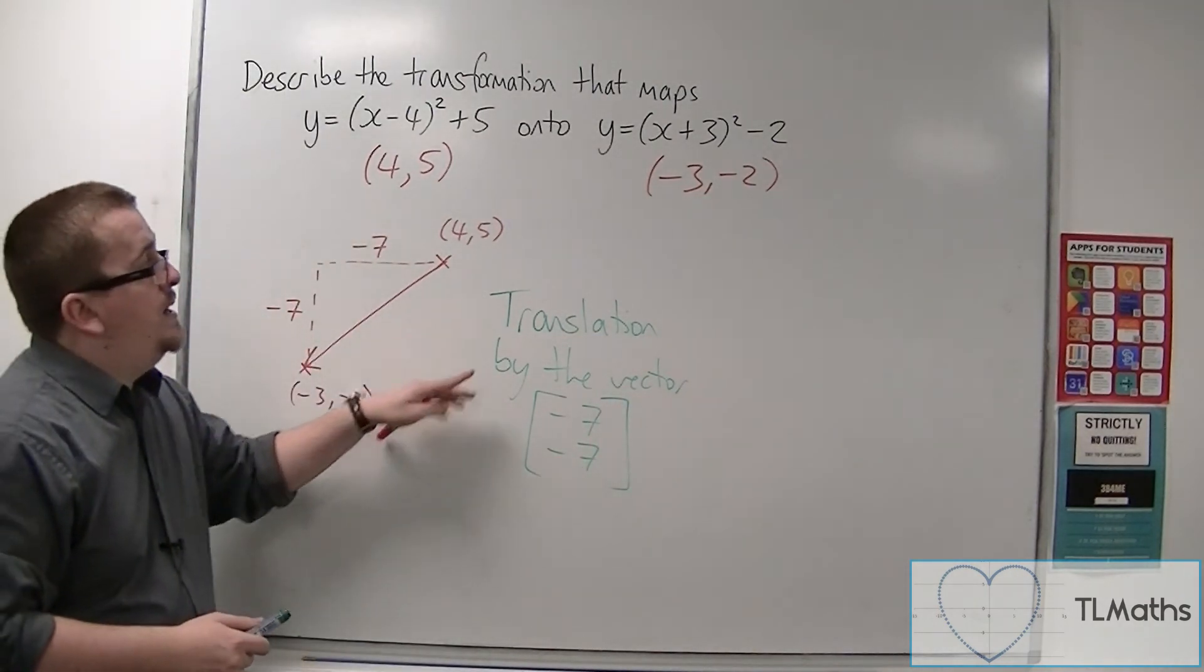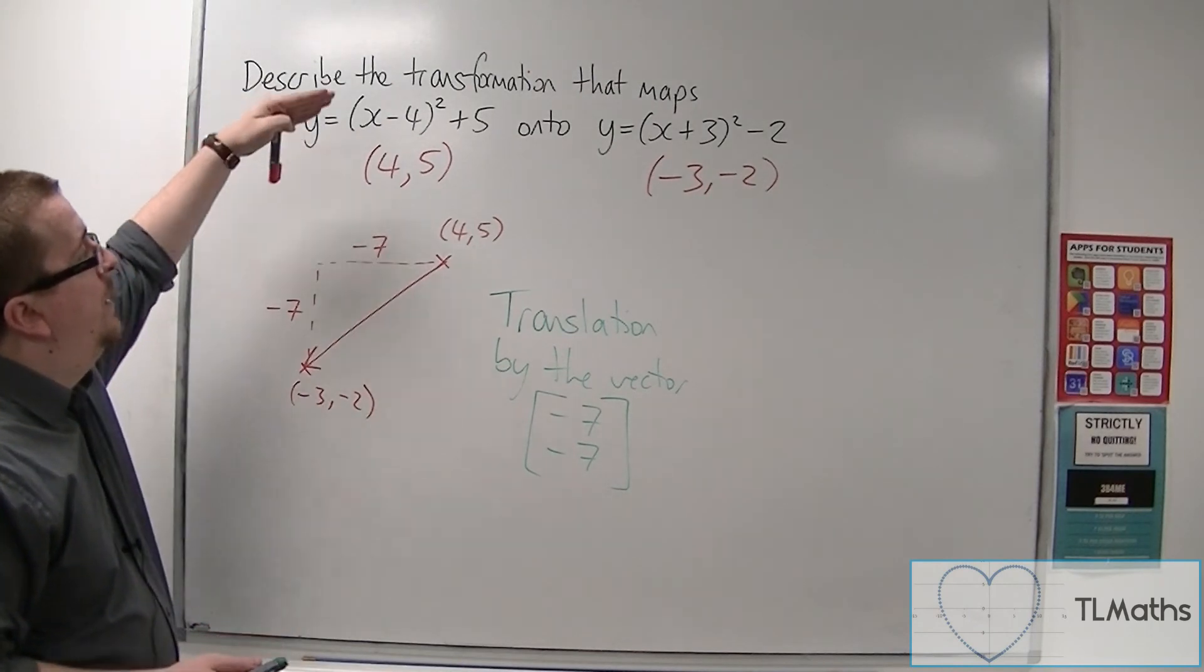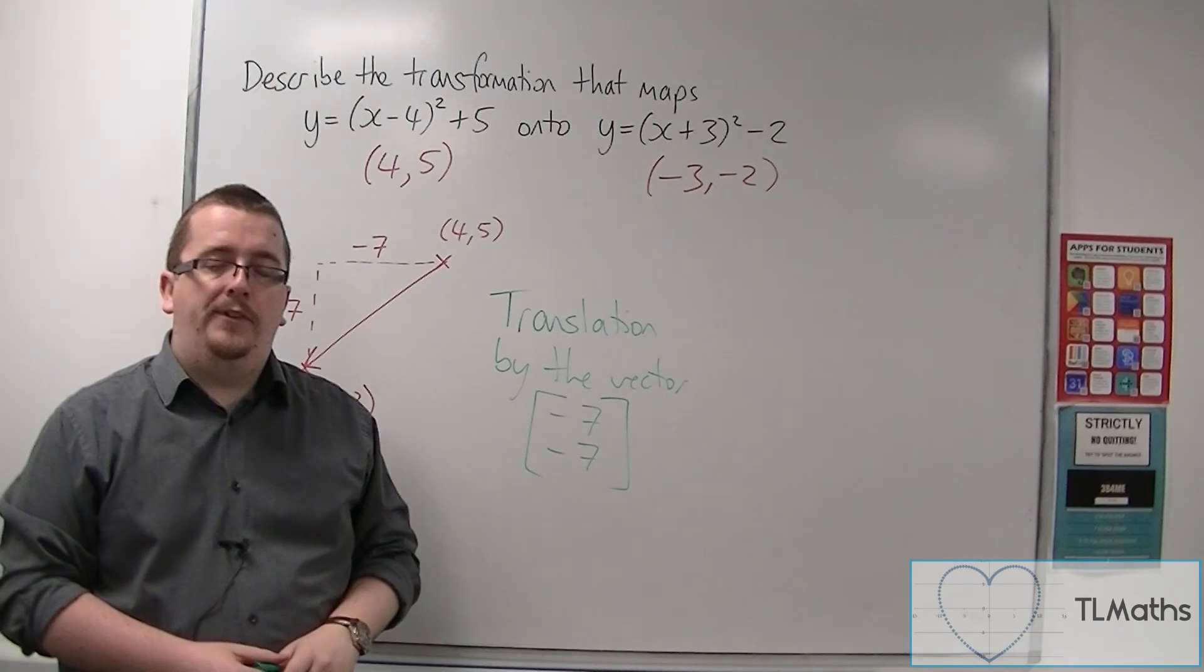And that describes how I get from y equals x minus 4 squared plus 5 to y equals x plus 3 squared minus 2. I'll see you next time.